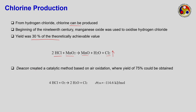The Deacon company then created a catalytic method based on wet air oxidation where around 70% yield could be obtained. In this process, hydrogen chloride gas is directly oxidized to form water and chlorine. The heat of reaction for this reaction is −114.6 kJ/mol.